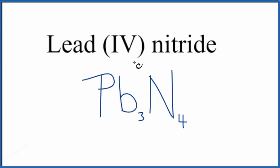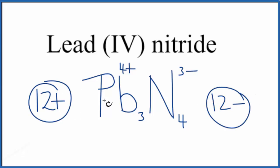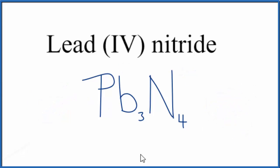Let's check our work. Lead is 4+ and nitride is 3−, so 3 times 4+ is 12+, and 4 times 3− is 12−. Adding these together gives a net charge of zero, which makes sense for a neutral compound. So the correct formula for lead(IV) nitride is Pb₃N₄.